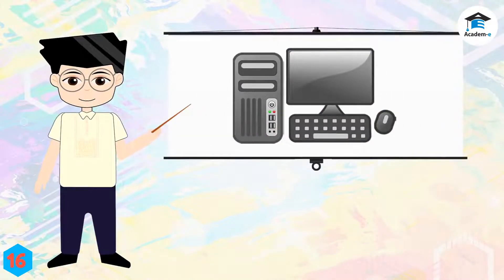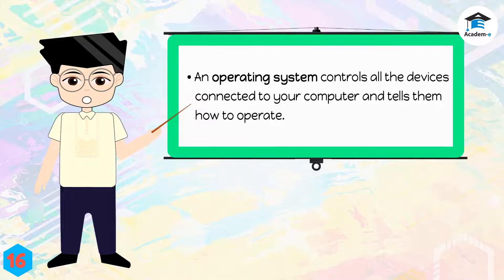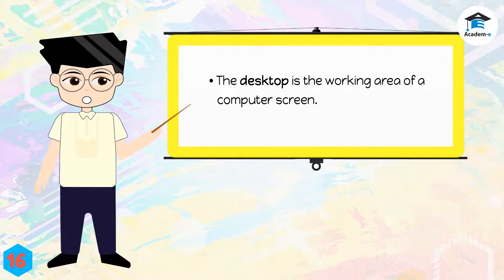Today we have discussed the operating system and the parts and components of the desktop. Let us review some of the things we have learned today. An operating system controls all the devices connected to your computer and tells them how to operate. Some examples of operating systems are Apple's Mac OS, Chrome OS, and Microsoft Windows. The desktop is the working area of a computer screen; here you'll see the icons, wallpaper, and taskbar.